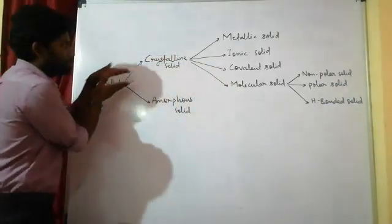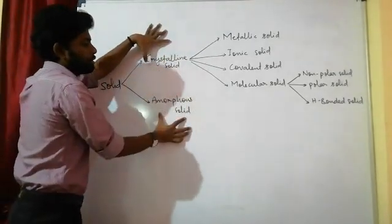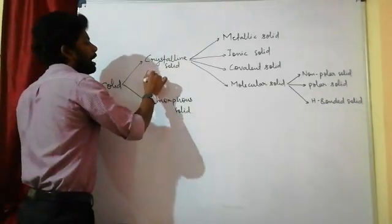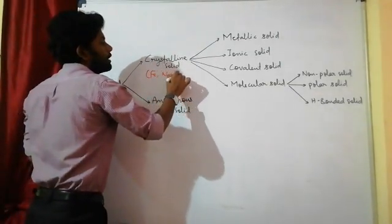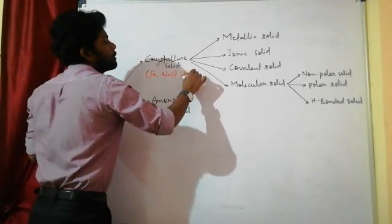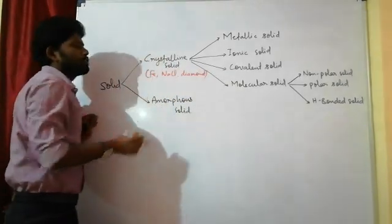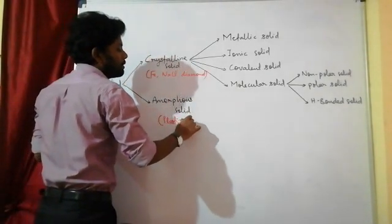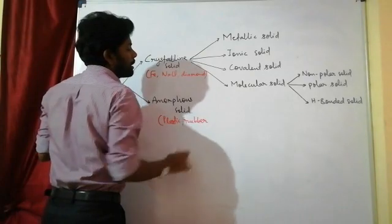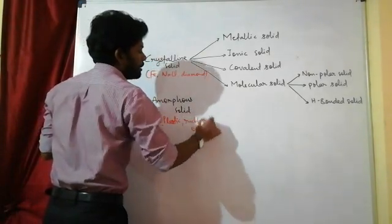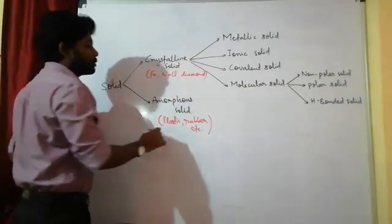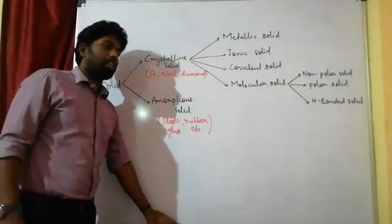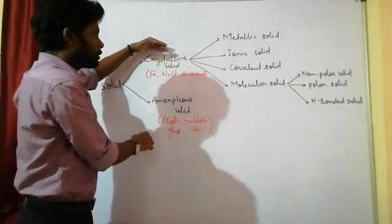Solids are of two types: crystalline solids and amorphous solids. Examples of crystalline solids are iron, metals, compounds, and diamond. Examples of amorphous solids include plastic, rubber, and glass.